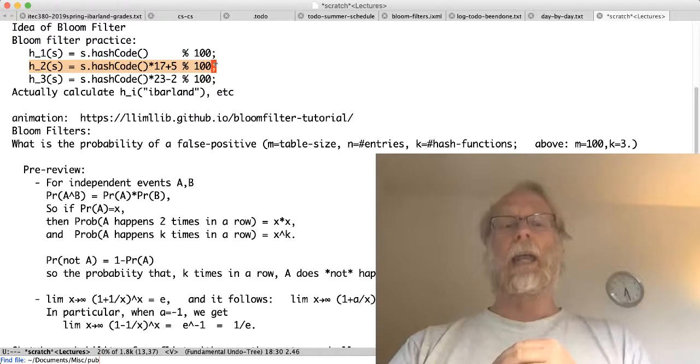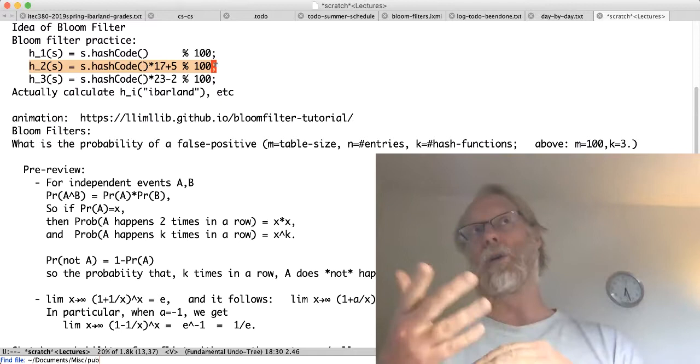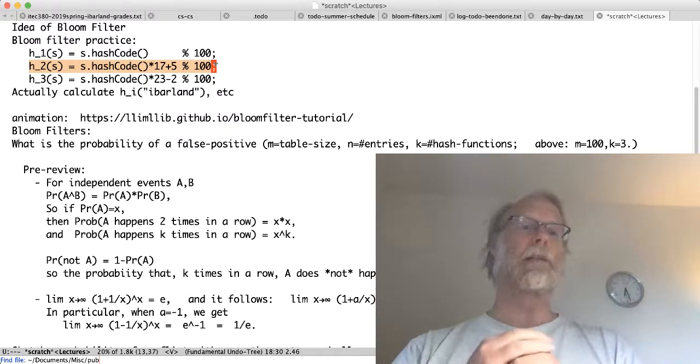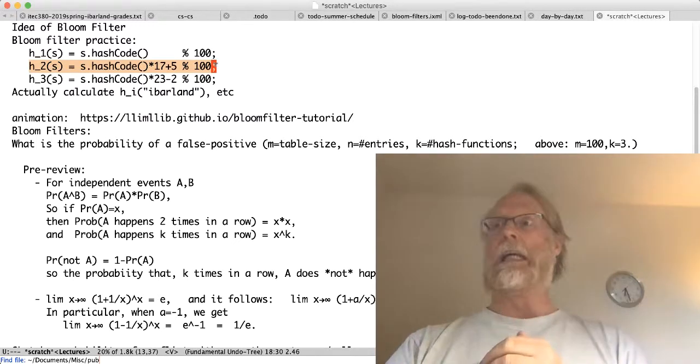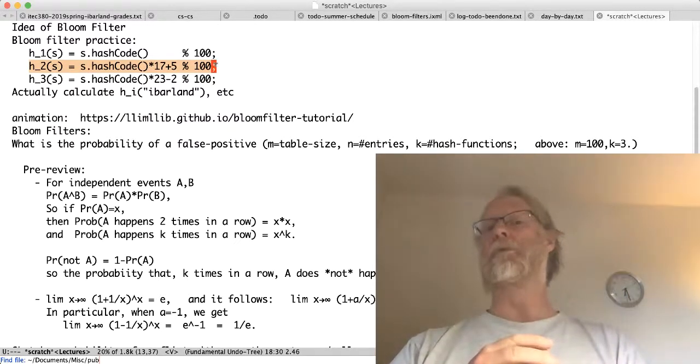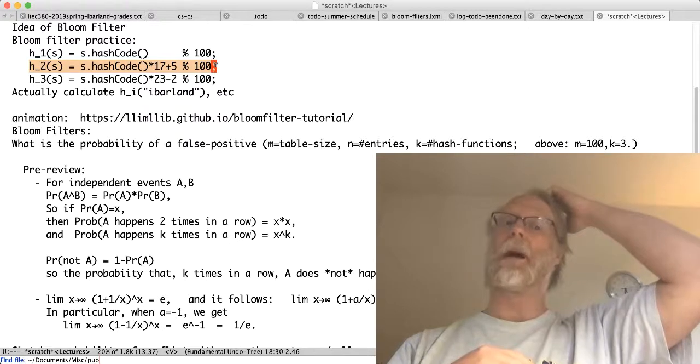Every time I get a new string to add to my set, I go ahead and set three bits in the table. Some of them might already be set by something else. Here's the weird thing about bloom filters: they're probabilistic, they can give a wrong answer sometimes, they can give a false positive.